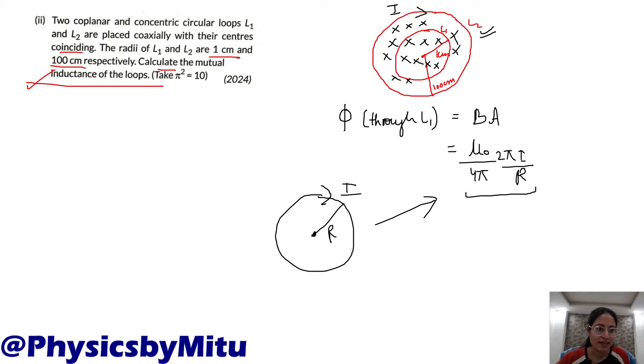μ₀/4π times 2πI/R into area of the loop. Now which area? Smaller area or bigger area? We need flux through L1. So I will take only this area. I will multiply by π times small r squared. I hope this is clear to you.